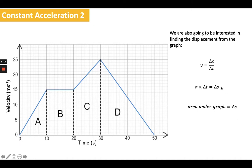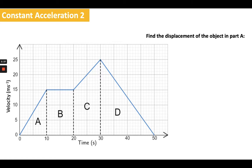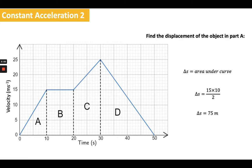I can show that through the units: displacement in meters equals meters per second times seconds, giving meters. So the area under the graph, multiplying the two axes together, gives the change in displacement. If I'm asked to find the displacement of the object in part A, I know the change in displacement is the area under the curve — and in this case it's a straight line, so the area is a triangle. I've got 15 as the height, 10 as the base, and I divide by two because it's a triangle. So the change in displacement is 75 meters — the body covers 75 meters during that time.